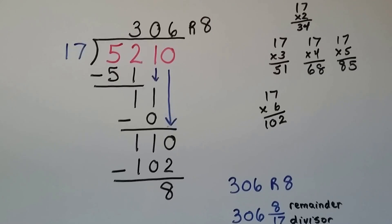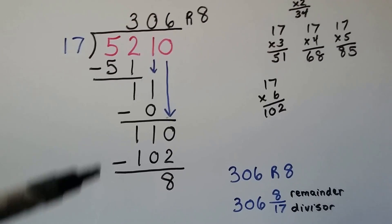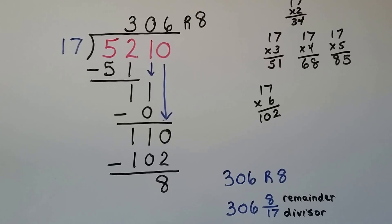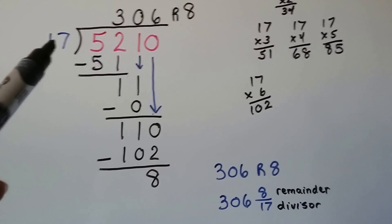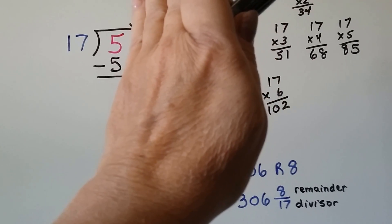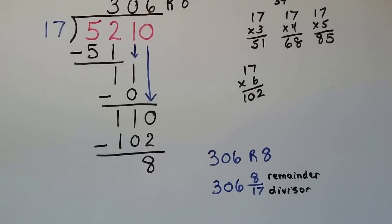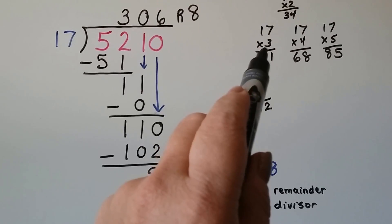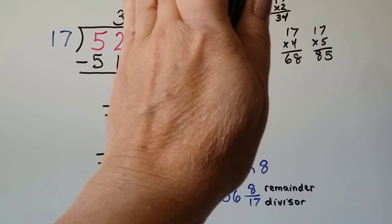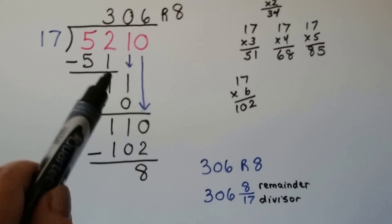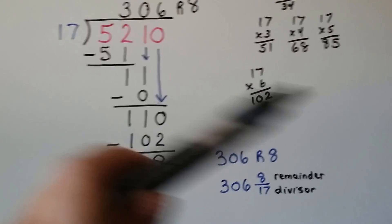In that video I go through one digit, two digits, three digits as divisors using the same numbers so you can see the problem grow and it'll make sense. For this problem, we have 5210 divided by 17. 17 can't fit into 5, so we move over. Can 17 fit into 52? Yes — 17 times 3 is 51. We put the 3 above the 2, subtract to get 1, and bring down the 1 to get 11.